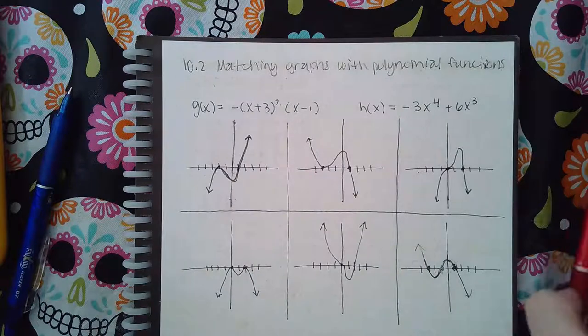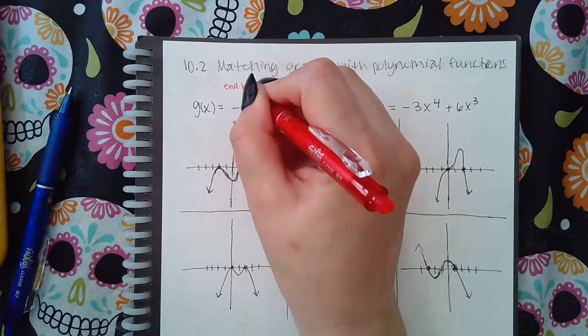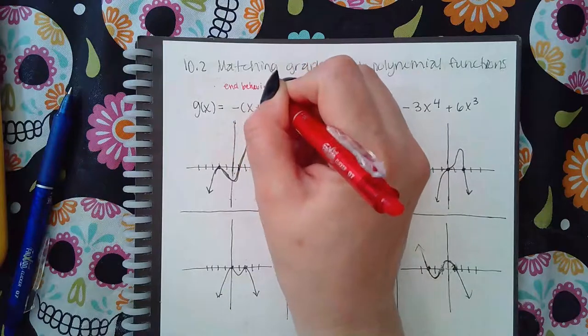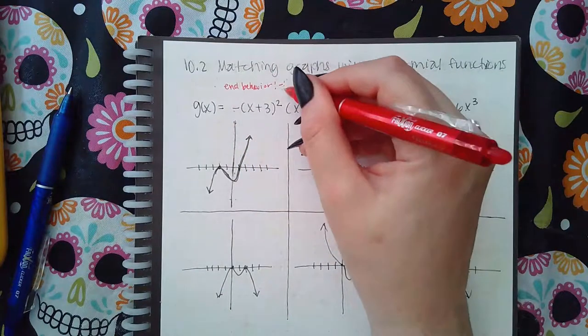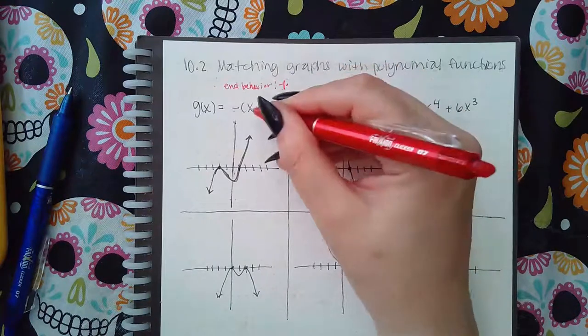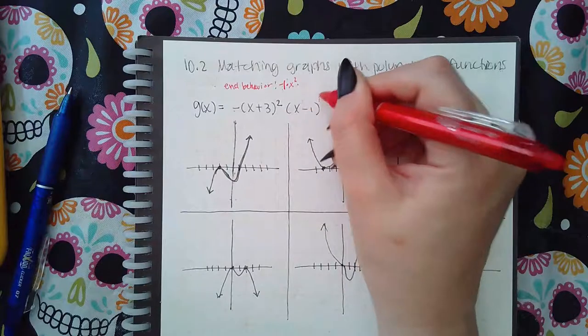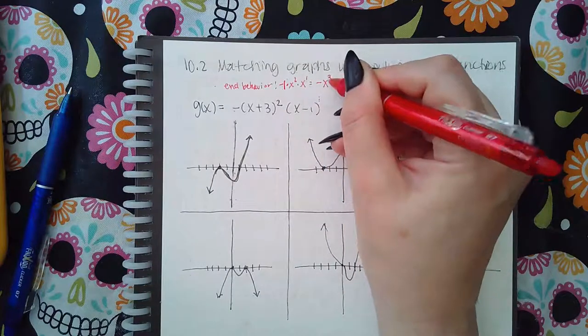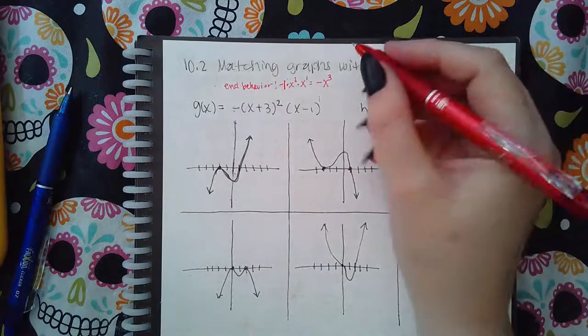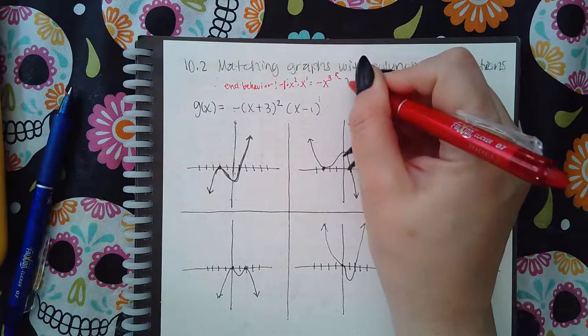So the first thing I'm going to do is I'm going to figure out what the end behavior is. And for this problem, I would get that by taking the negative one in the front times x squared times x to the power one. And I get a negative x to the power three, which means that my end behavior should be going up on the left and down on the right.